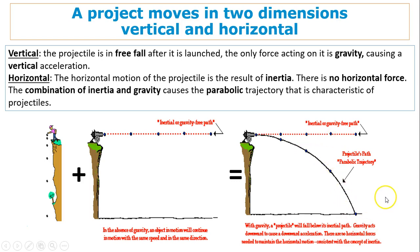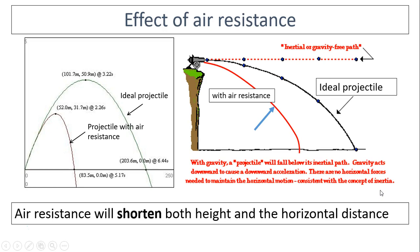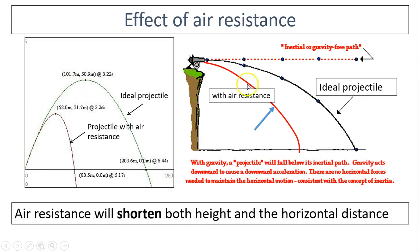Effect of air resistance: on the graph, the left shows an ideal projectile and the red path shows a projectile with air resistance. Air resistance will shorten the horizontal distance in both cases, but only shorten the height if the projectile is launched from the ground, not launched horizontally.